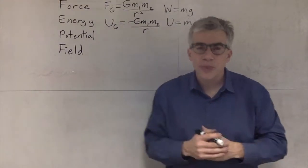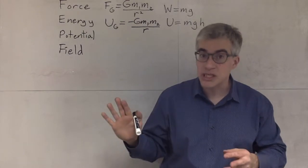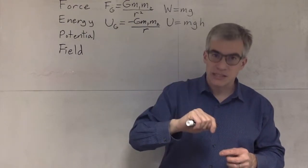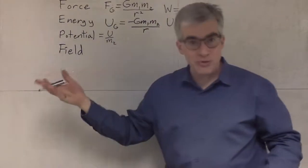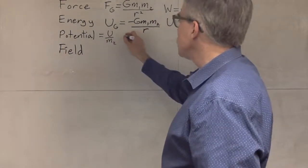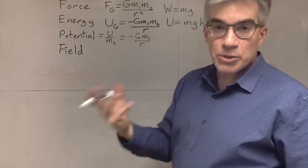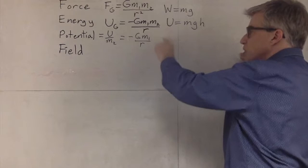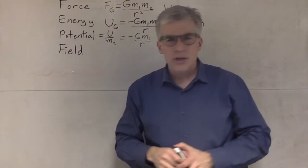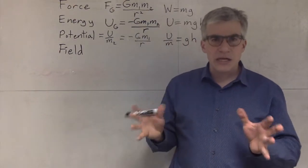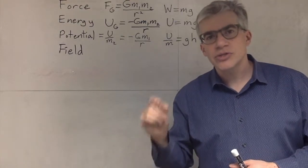What is this new thing — potential? In terms of gravity, it's a terrible name because it sounds like potential energy, but it's not potential energy. It's potential energy per mass. So gravitational potential is U divided by mass₂, or −G·m₁/r. This is a formula for the energy per mass. Potential and field are not describing an object — they're describing a location. It's a property of a location in space.